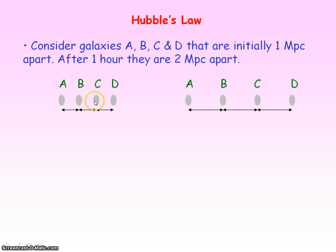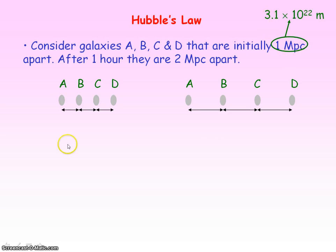Let's consider four galaxies that are one megaparsec apart — that's 3.1 times 10 to the 22 metres apart. After one hour, because of the expanding universe, they are now two megaparsecs apart.